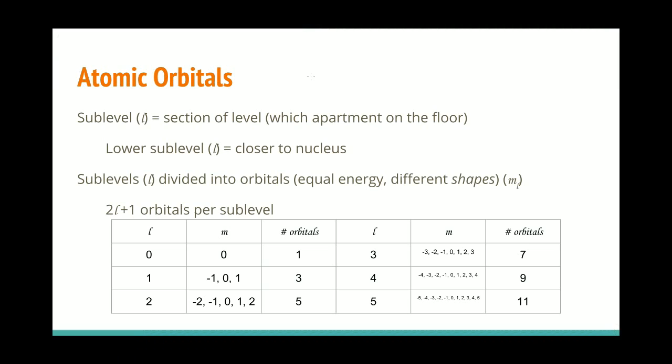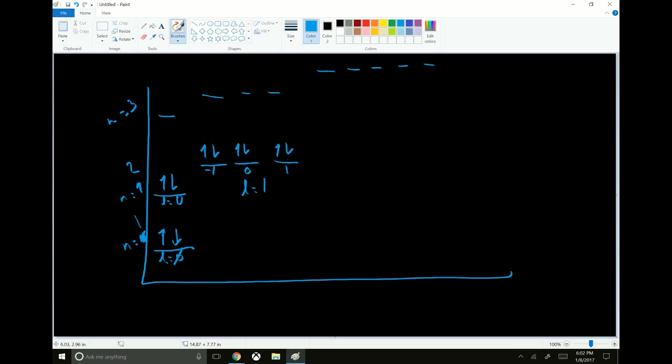Now, each of those sub levels is divided into orbitals. Some number of orbitals. And those orbitals are all at the same energy. And that's why I've been drawing them, or trying to draw them on a horizontal line like this. These three orbitals are at the same energy. These three orbitals are at the same energy. These five orbitals are at the same energy.